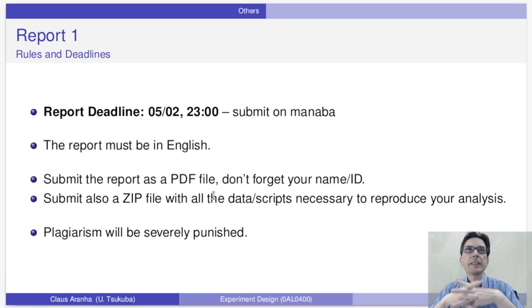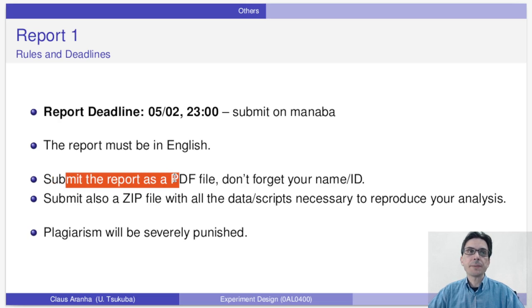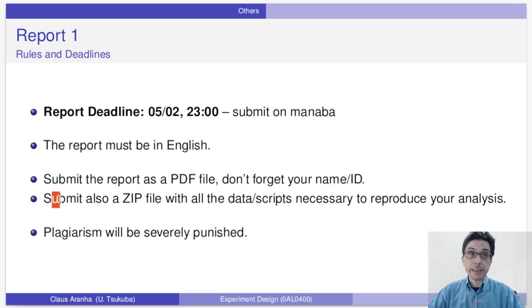Some rules and deadlines for the report: the report deadline is May 2nd at 23:00. You submit it on Manaba. This is at the beginning of the Golden Week. I would prefer if you did not spend your Golden Week on this report - spend your Golden Week resting and having fun. The report must be in English, and you have to submit two files. The first one is a PDF file with the report itself. Don't forget to write your name and student ID on the file.